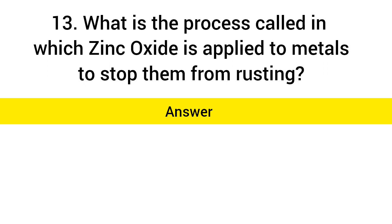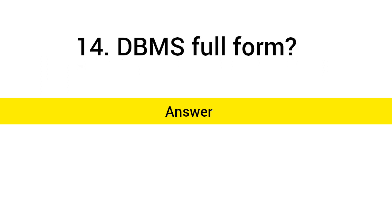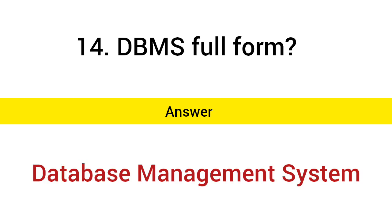What is the process called in which zinc oxide is applied to metals to stop them from rusting? Answer: Galvanization. DBMS full form: Answer: Database Management System.